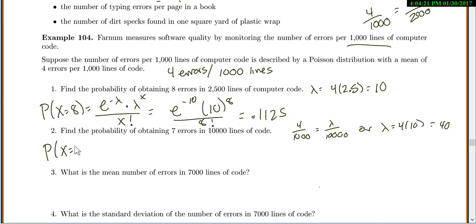Okay, so probability that X equals 7. So e^(-40) times 40^7 over 7 factorial is 1.38 times 10^(-10).